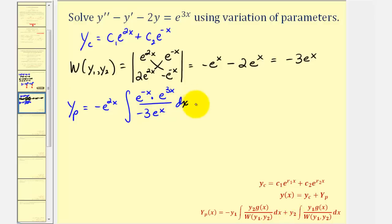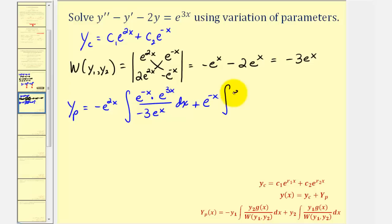Plus y sub two, which is e to the negative x, times the integral of y sub one times g of x — y sub one is e to the two x, g of x is e to the three x — divided by negative three e to the x.